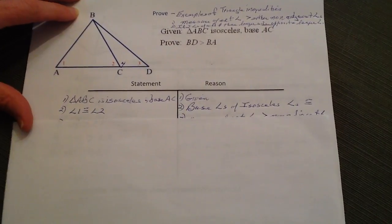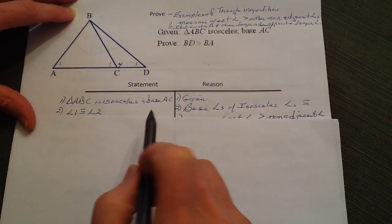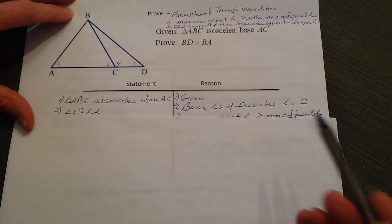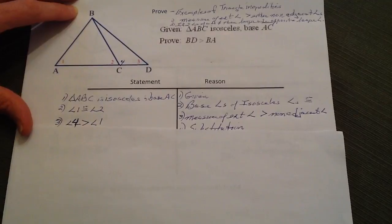And then number two, we know that angle one is going to be congruent to angle two because the base angles of an isosceles triangle are always congruent. That's by definition.